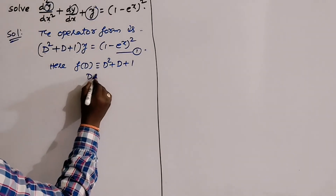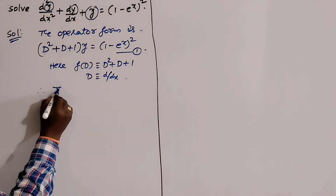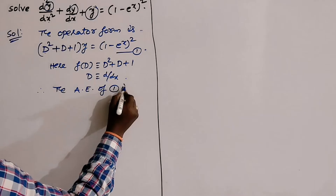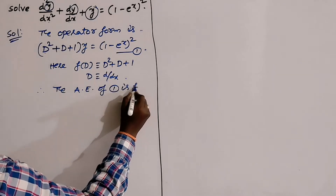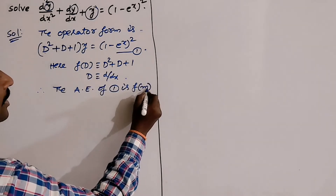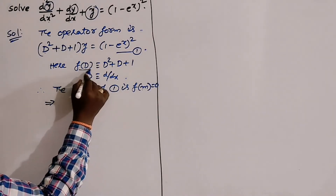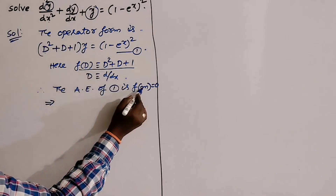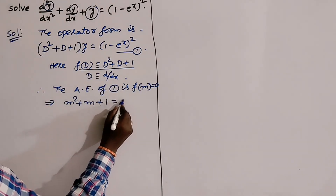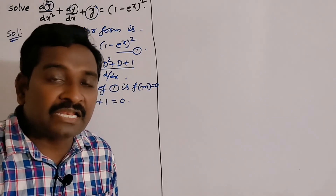First, write the auxiliary equation. The auxiliary equation of (1) is f(m) = 0 — you can also use f(r) = 0 as you wish. f(m) means replace D by m in f(D), so you get m² + m + 1 = 0. Clearly, this quadratic equation does not have direct factors.